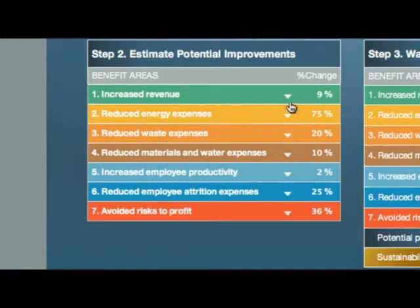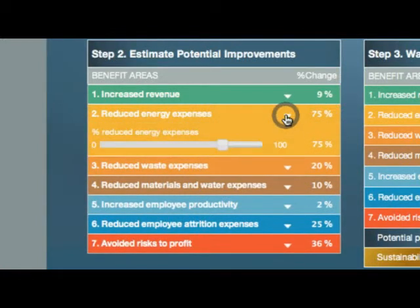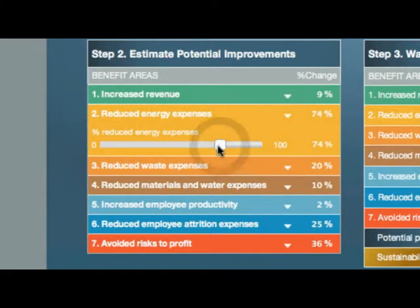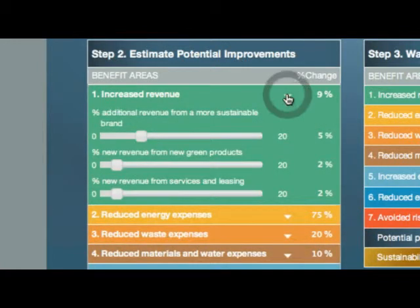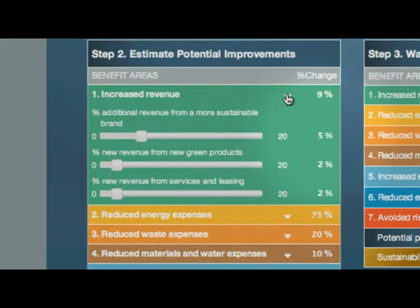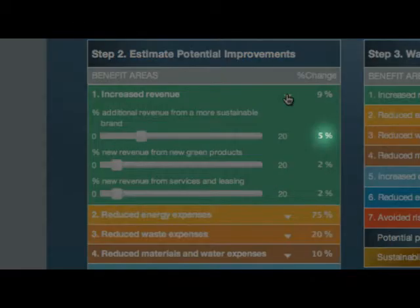To tune these potential improvement percentages to your situation, click on the benefit that you want to change and move the sliders to the desired percentage improvement value. For example, click on Revenue to reveal the three revenue streams that can be tapped into using sustainability-related strategies. As you can see, the research shows that a typical company can make at least 5% more revenue by being a more attractive brand to its customers.